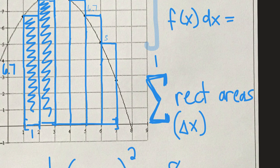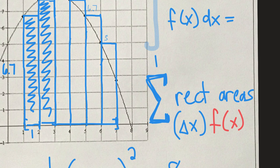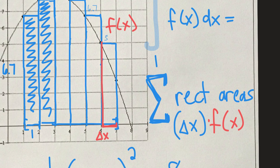Eventually we're going to take the limit of all these approximations, and that becomes the actual area underneath the curve. For right now it's just an approximation. Delta x is the width of our rectangle, and the height is found by the y-value. Width delta x times the y-value gives you the area of each rectangle. The smaller the width, the better the approximation, but multiplying by one is pretty easy.